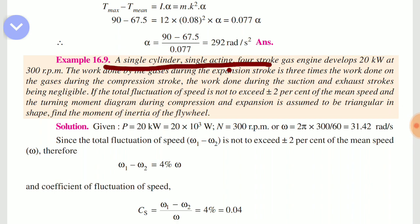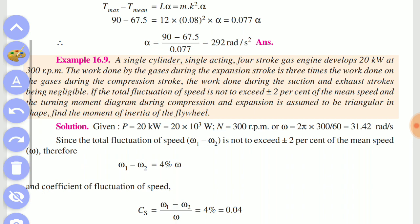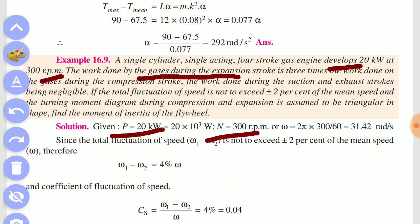We will see the next 4-stroke engine. The 4-stroke engine develops 20 kW of power at 300 rpm. The work done by the gases during the expansion stroke is 3 times the work done on the gases during the compression stroke.